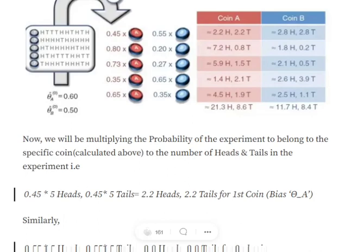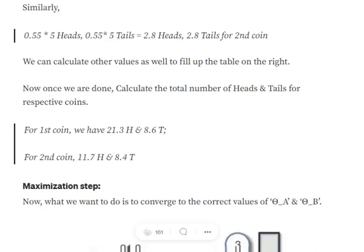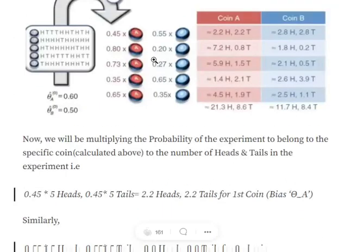Recapping: we took rough estimates for theta_a and theta_b, then used the binomial distribution for the first experiment to calculate expected heads and tails if it belonged to coin A or coin B, normalized those probabilities, then used them to compute expected counts. For the second experiment with nine heads and one tail, using the same theta_a = 0.6 and theta_b = 0.5, we get P(coin A) = 0.8 and P(coin B) = 0.2. Multiplying: coin A gets 7.2 expected heads and 0.8 tails; coin B gets 1.8 heads and 0.2 tails.